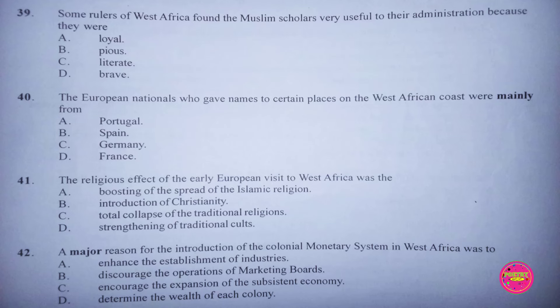Question 40. The European nationals who gave names to certain places on the West African coast were mainly from: A. Portugal, B. Spain, C. Germany, D. France. The correct answer to this question is A. Portugal.